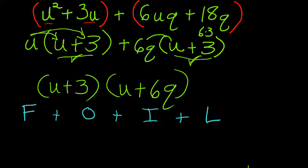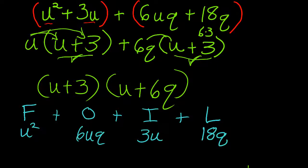So now first is going to be u times u. That's u squared. Outside is going to be u times 6q. So that's going to be 6uq. And then inside is going to be 3u. And last is going to be 3 times 6 times q, which will be 18q. And we're adding these terms.